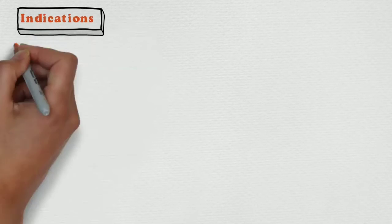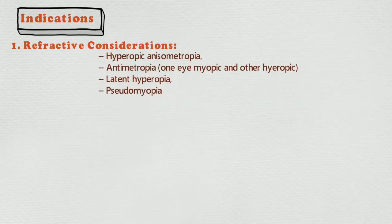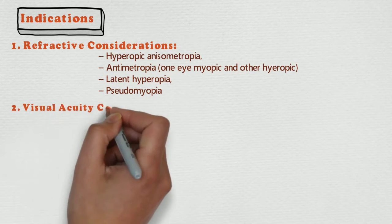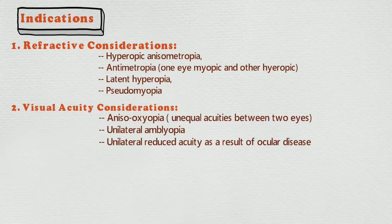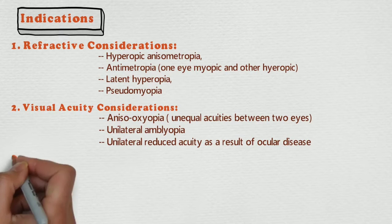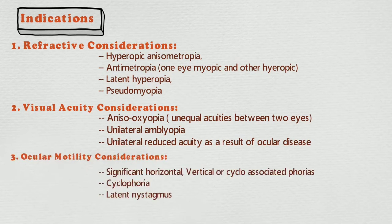Indications of binocular refraction. First, refractive considerations: hyperopic anisometropia, antimetropia, latent hyperopia, and pseudomyopia. Second, visual acuity considerations: aniseikonia, unilateral amblyopia, and unilateral reduced acuity as a result of ocular disease. Third, ocular motility considerations: significant horizontal, vertical and cyclo-associated phorias, cyclo-phoria, and latent nystagmus.